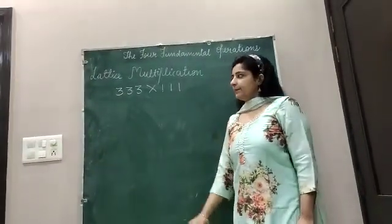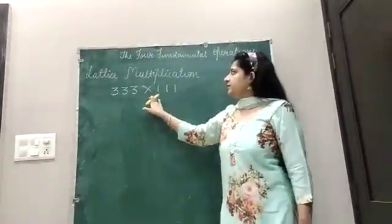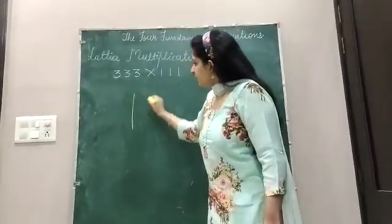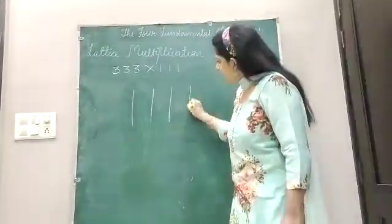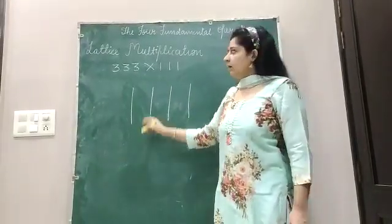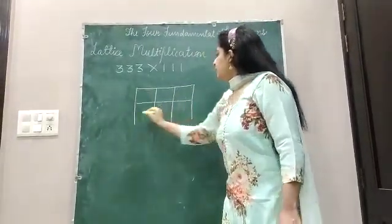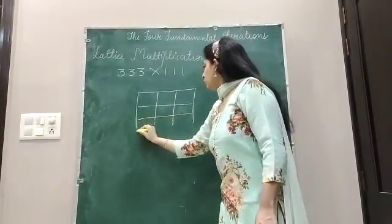Let us take one more example: 333 multiplied by 111. Again, there are 3 digits in the multiplicand, so you have to draw 3 columns, and 3 digits are there in the multiplier, so you have to draw 3 rows.